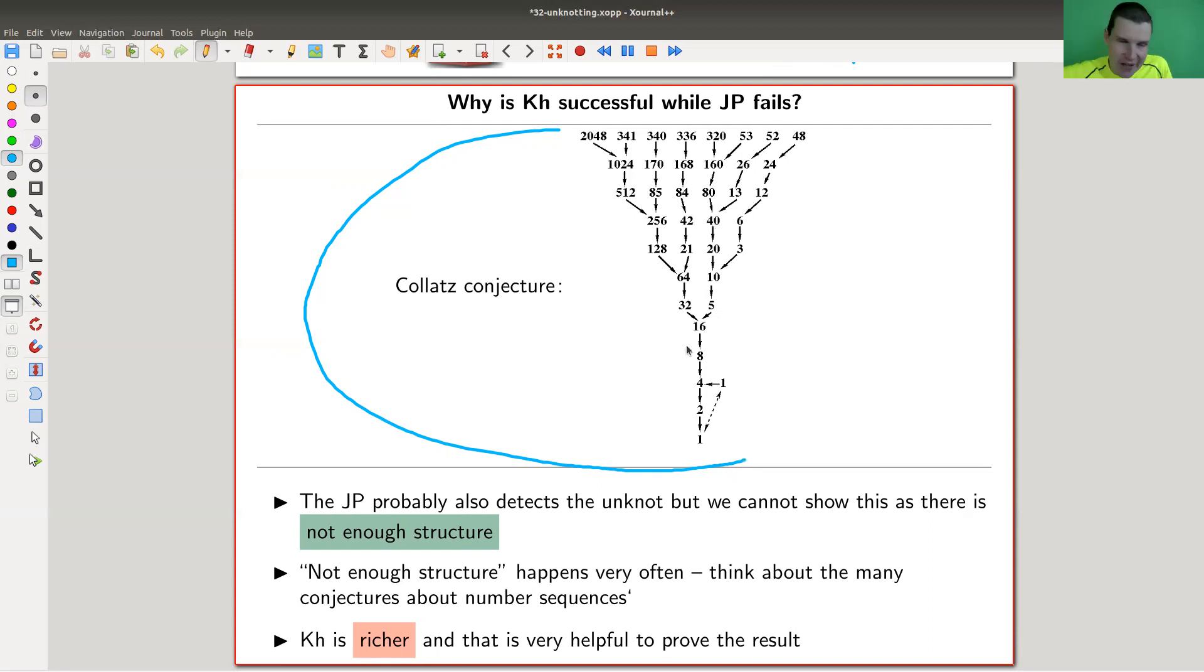Any type of conjecture you know from basic number theory is very hard to prove, if ever been proven. The problem is there's not enough structure around. It's the same kind of story between the Jones polynomial and Khovanov homology.